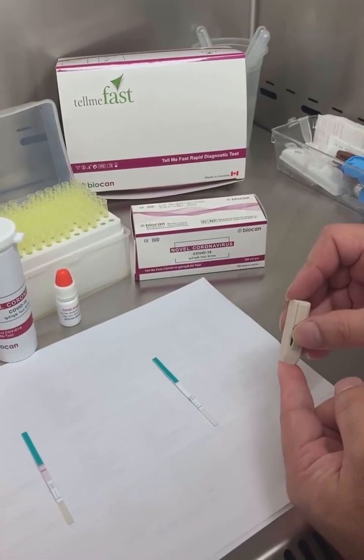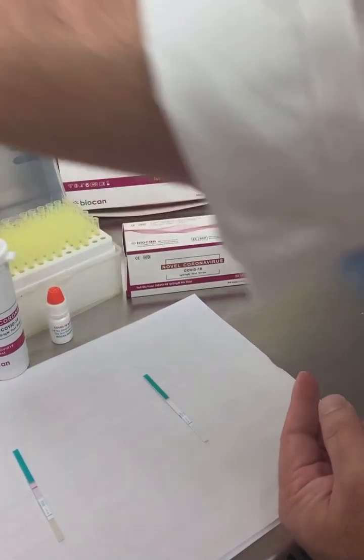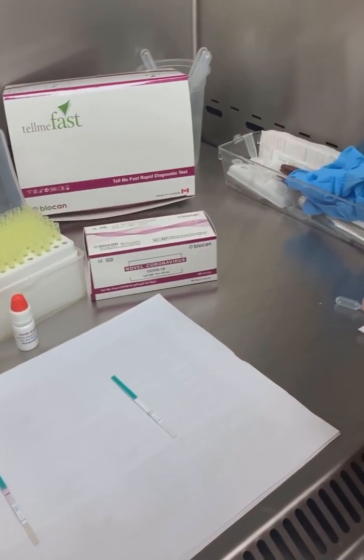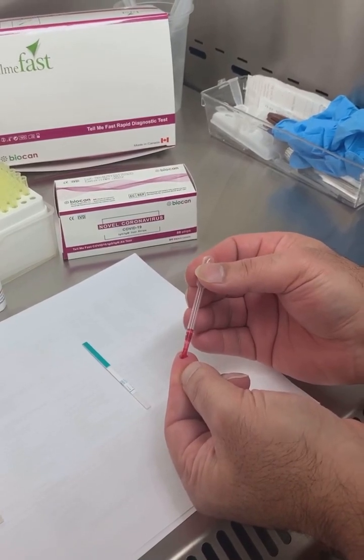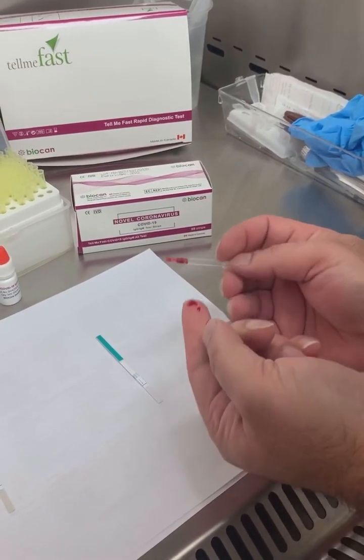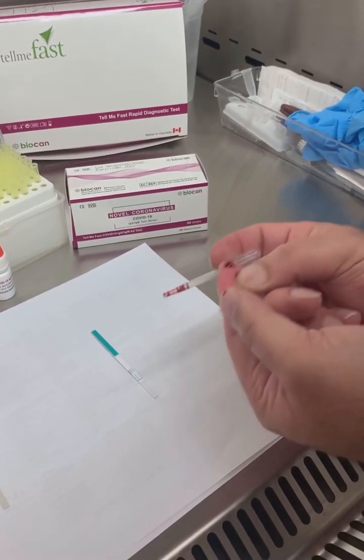Now we're going to be performing the test using the finger prick whole blood. With a lancet, prick your finger. With a pipette, take 20 microliters of whole blood and dispense it on the sample pad of the test strip.